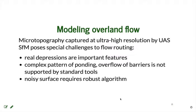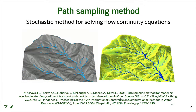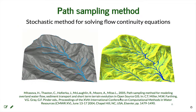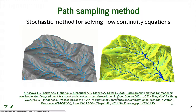One method that works with these noisy surfaces with a lot of depressions is the path sampling method. It is a stochastic method for solving flow continuity equations — actually solving partial differential equations describing overland water flow. Its stochastic component makes it very robust on noisy surfaces, and it couples the duality of discrete particle representation and continuous surface representation of water depth. Essentially, water depth is computed as the density of particles passing through each grid cell.